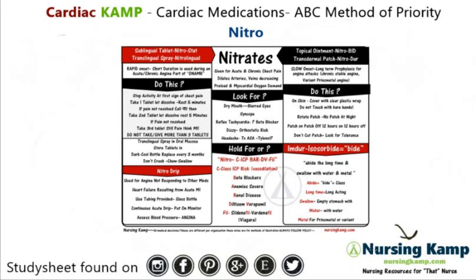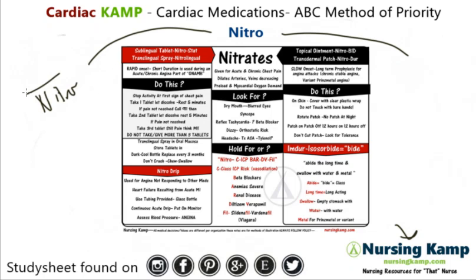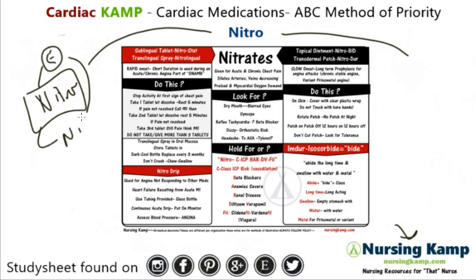The first thing to think about with nitro is that nitro is a different class — it's a nitrate. Nitro is one of the elements in the periodic table, and the interesting thing is that in the presence of the body it creates nitric oxide, which actually causes vasodilation.